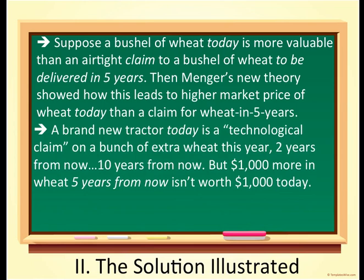Now I'm going to tie it back into the examples from the last lecture. A brand new tractor today, in a sense, is like a technological claim that's going to entitle the owner to extra wheat this year, extra wheat two years from now, three years from now, all the way up to ten years from now. So we're not talking about a piece of paper that's a legally enforceable contract — now we're talking about a physical relationship. If you own a brand new tractor right now, that will produce for you extra wheat at the end of this year, next year, up through ten years from now.